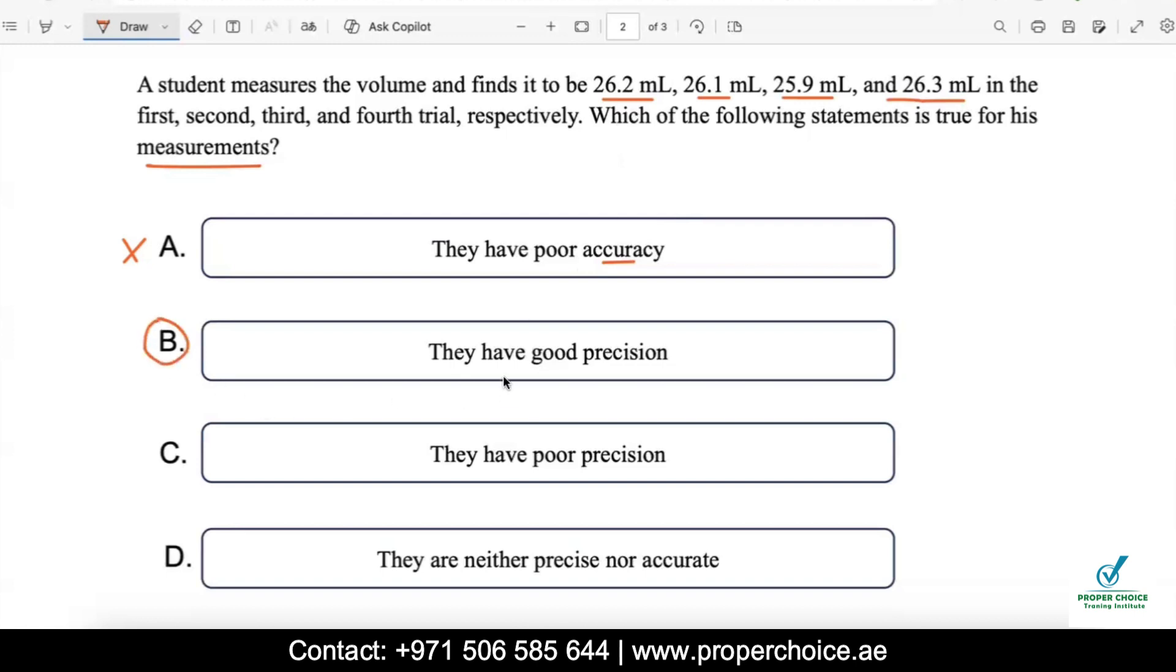Then what next? Then if the experimental data are very close with each other, they are said to be precise. Definitely this option goes with option number B. Precision is basically when you are conducting an experiment multiple times and every time you are getting the same result or very close with each other, without comparing to something else, without comparing to the standard value. Whatever the result you are getting, is it right or wrong, regardless of it, if multiple times you are getting the same result, then we say they are precise the values. So here 26.2, 26.1, 25.9, they are very close data. That's why we go with they have good precision.